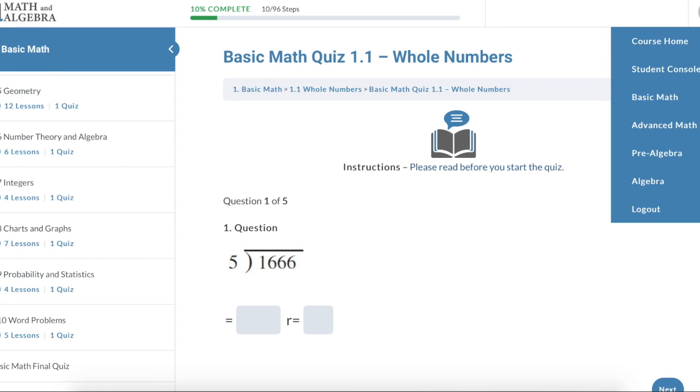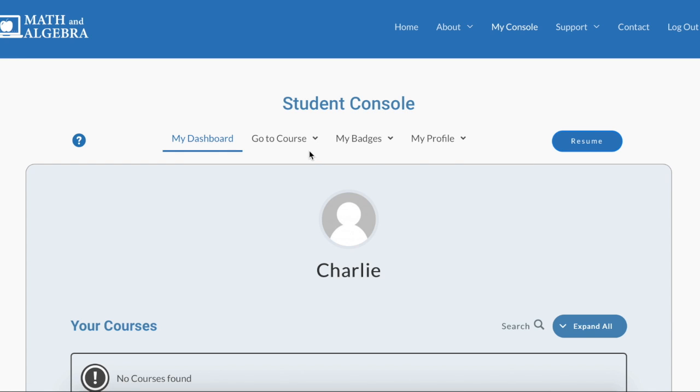Now I'm going to go over here and hover over this profile icon where your students will be able to navigate to wherever they need to go. So if I go over here and take us back to the student console and we're going to see this. So go to course right there. I showed you that. So now I want to show you my badges.